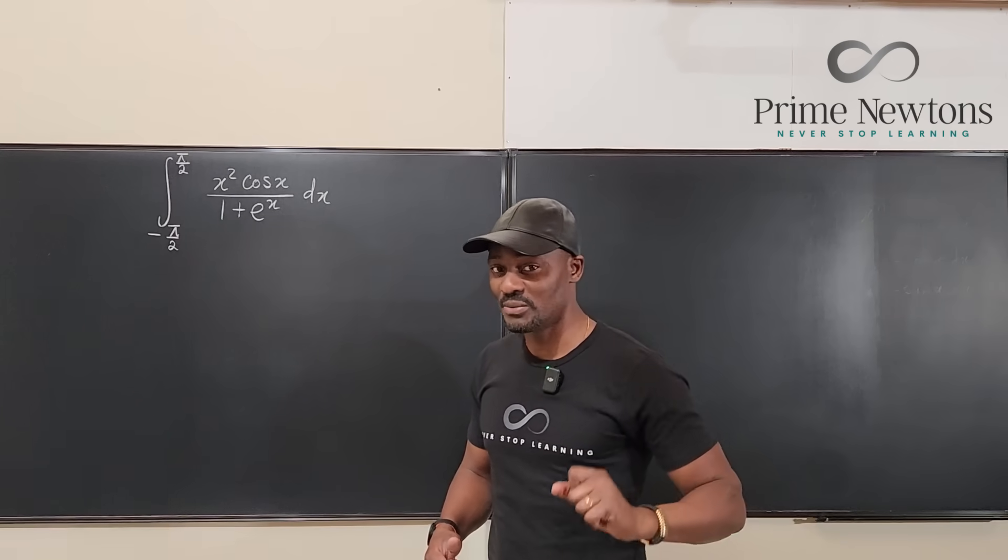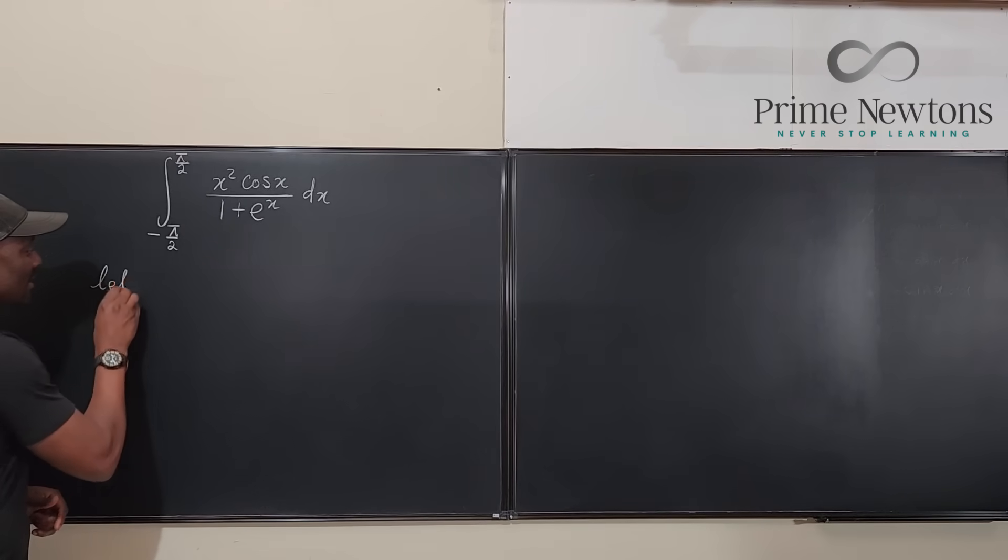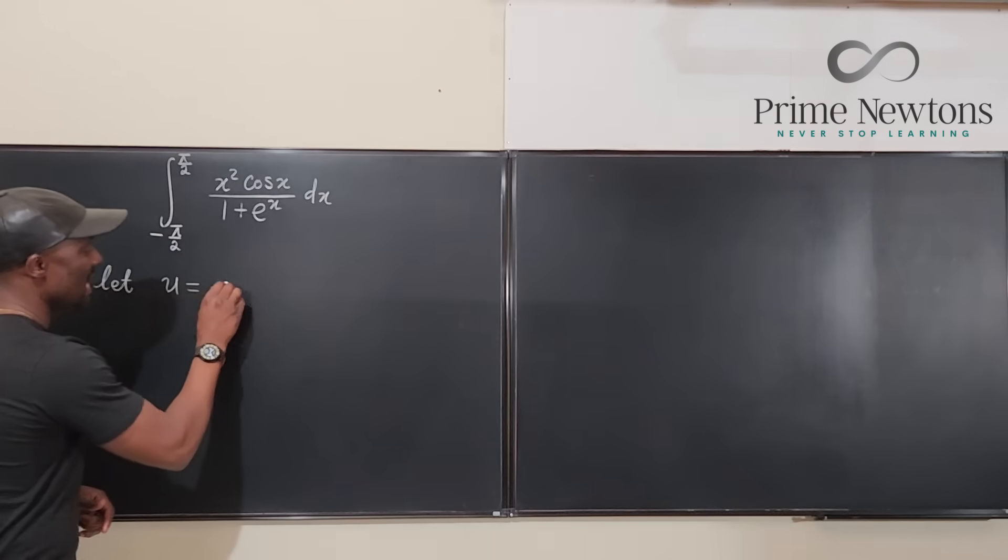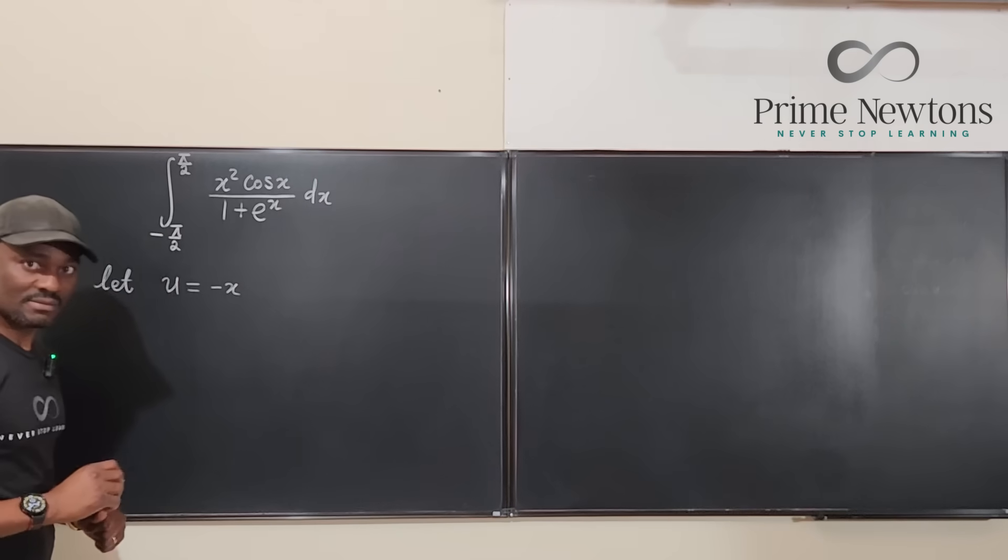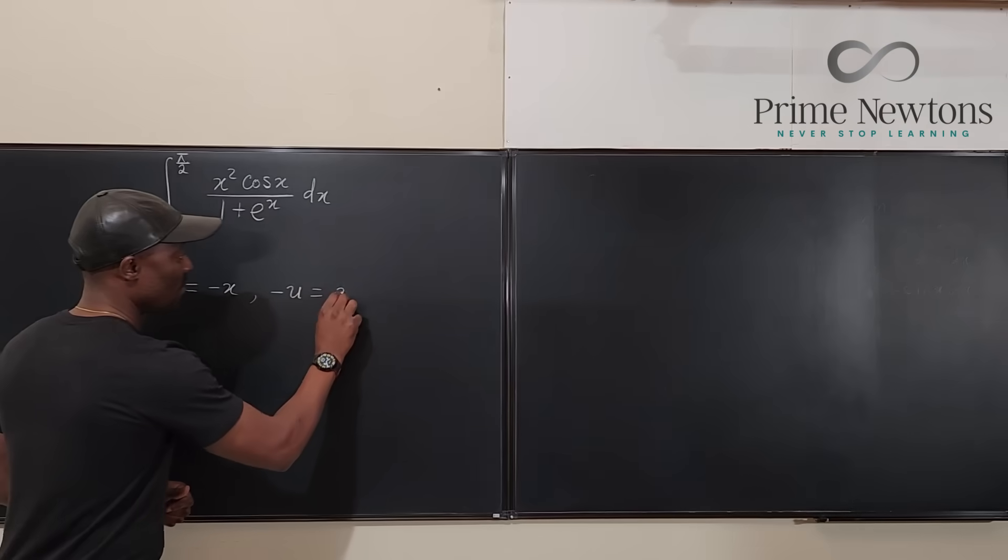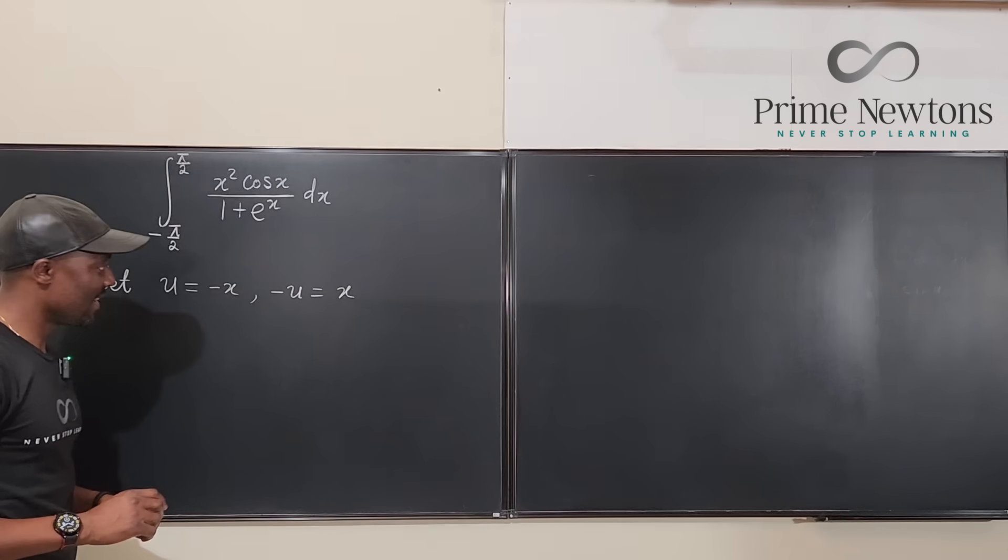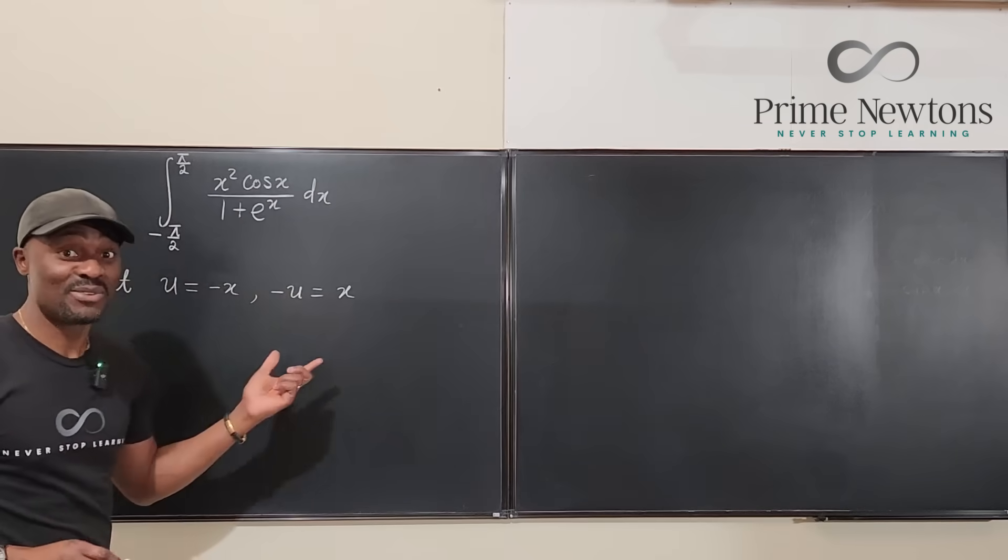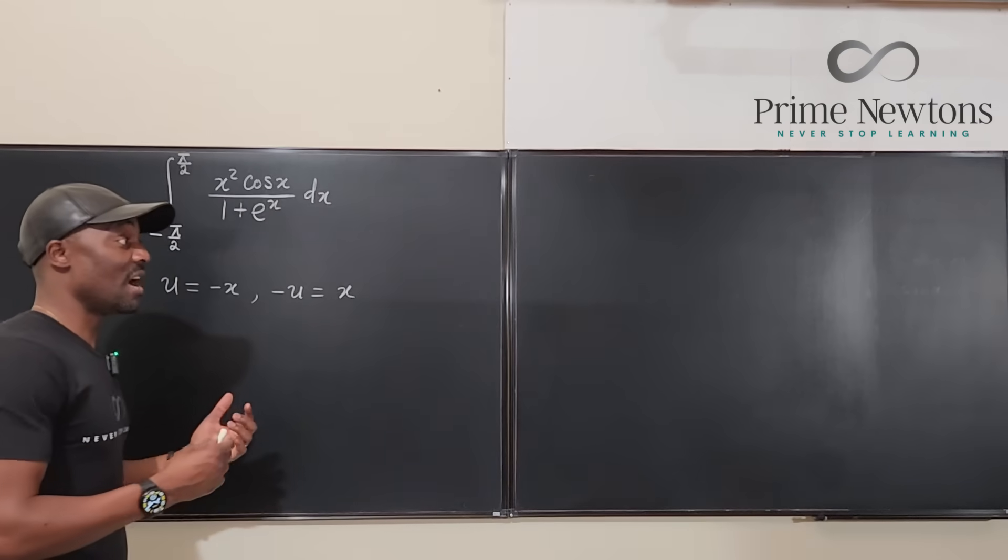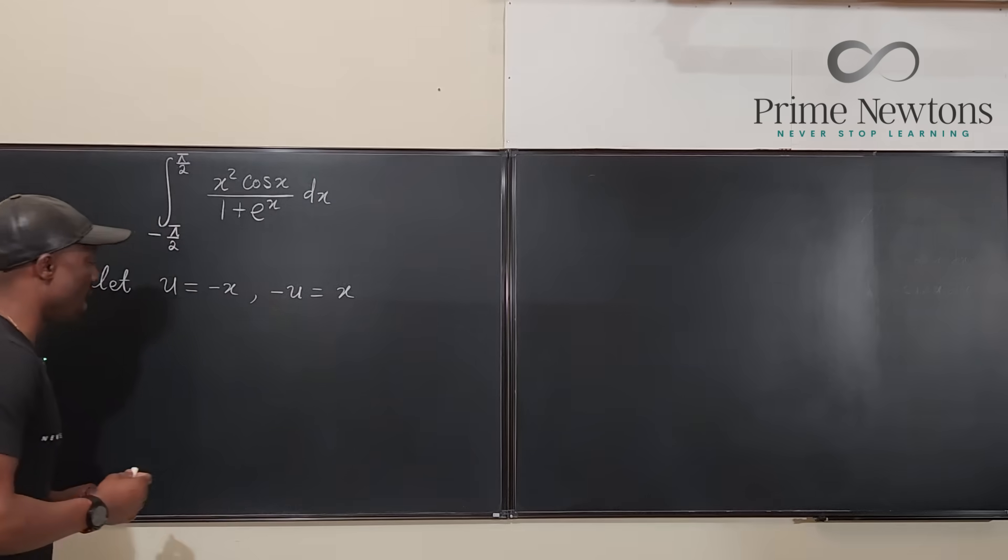So watch what's going to happen. We're going to do a u substitution. So we're going to say let u be equal to the negative of x. That means that negative u is equal to x. This is crazy because I would never have thought of this. I would have just done my plugging in and confirmed whether it was even or odd, whether the function was even or odd.